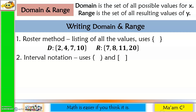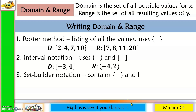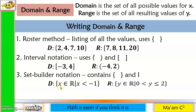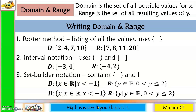The next method is interval notation, which uses parentheses and brackets. The third is set builder notation, which uses braces and a vertical line. For example, this is read as 'x is an element of real numbers such that x is less than negative 1.' Others write it as 'x such that x is an element of real numbers or x is less than negative 1.' Either form is correct.